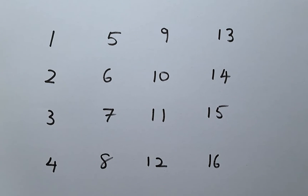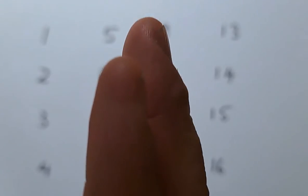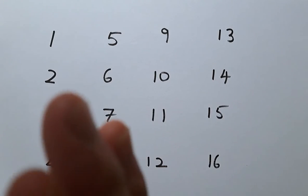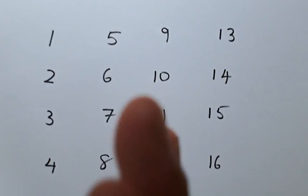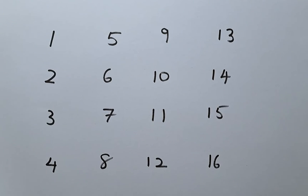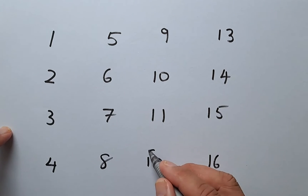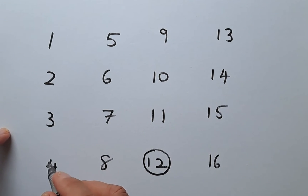If you choose a number, then the second number you choose, you cannot include any numbers in its row or its column. So for example, if we choose the first number as 12, the next number, we cannot choose the numbers in the row or column of 12.